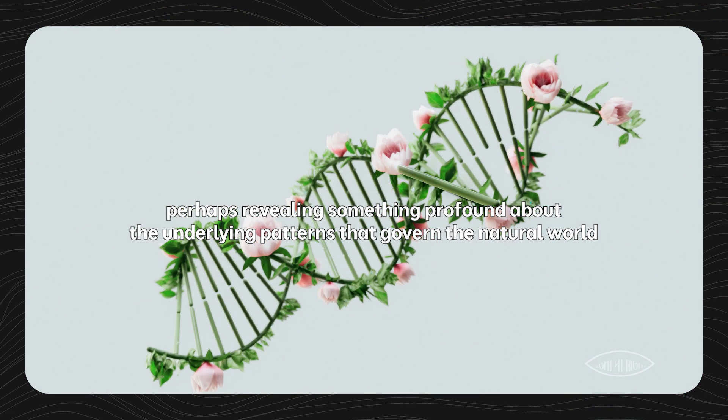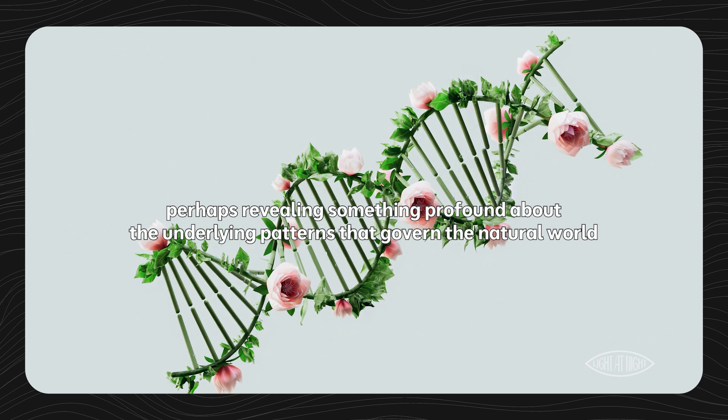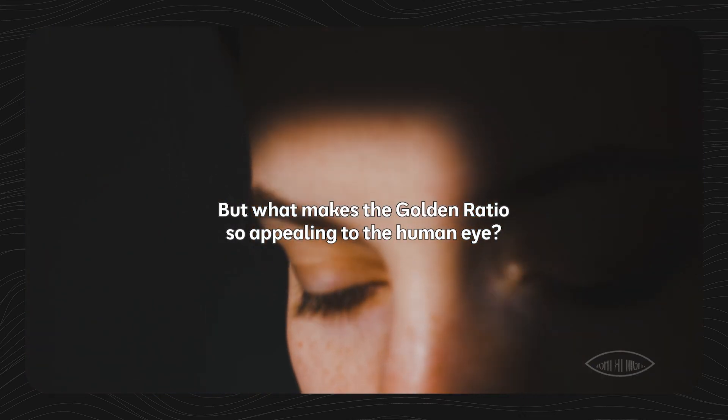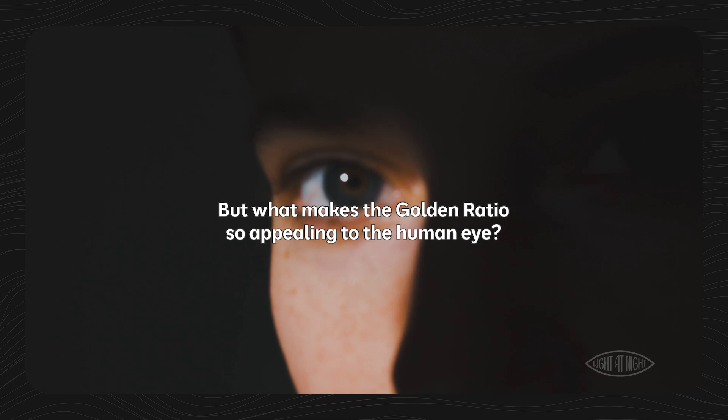But what makes the golden ratio so appealing to the human eye? It seems that phi is written into the very code of life, perhaps revealing something profound about the underlying patterns that govern the natural world.